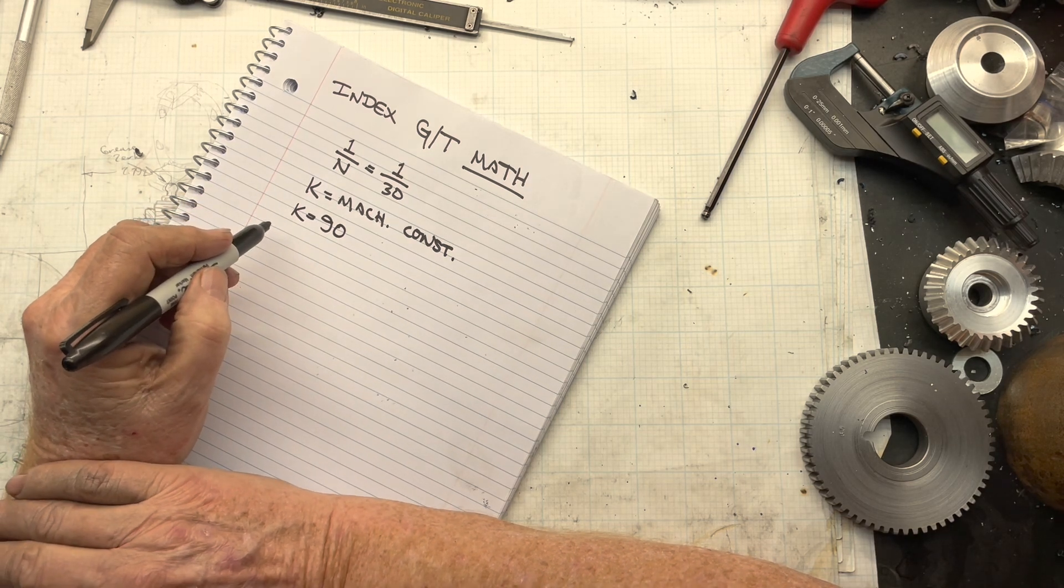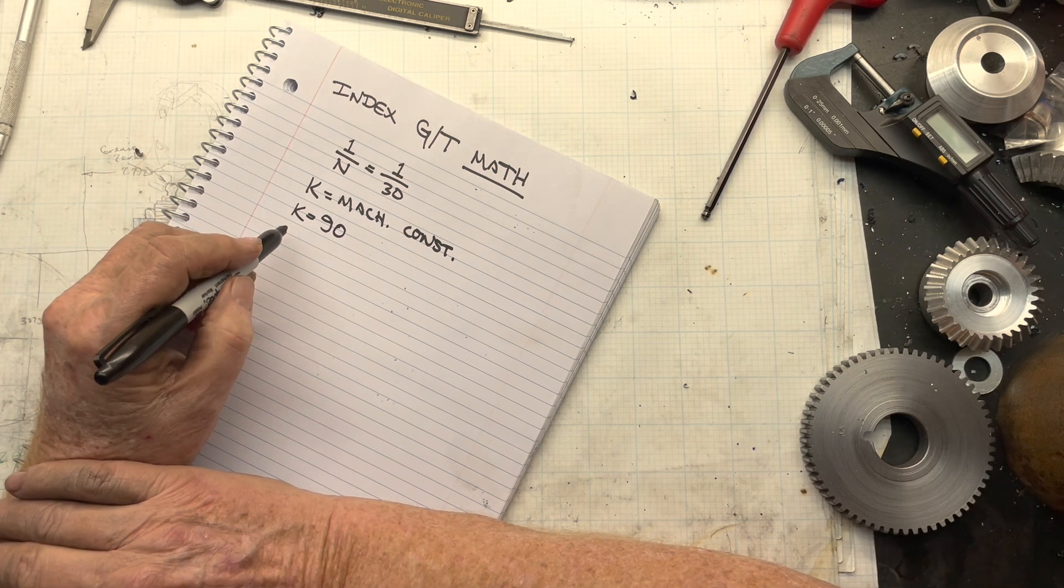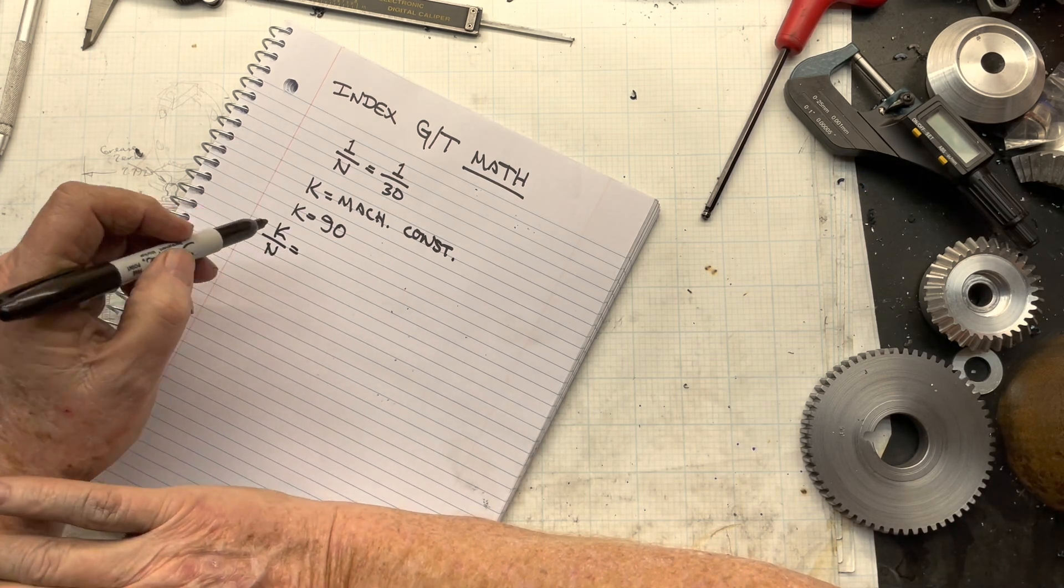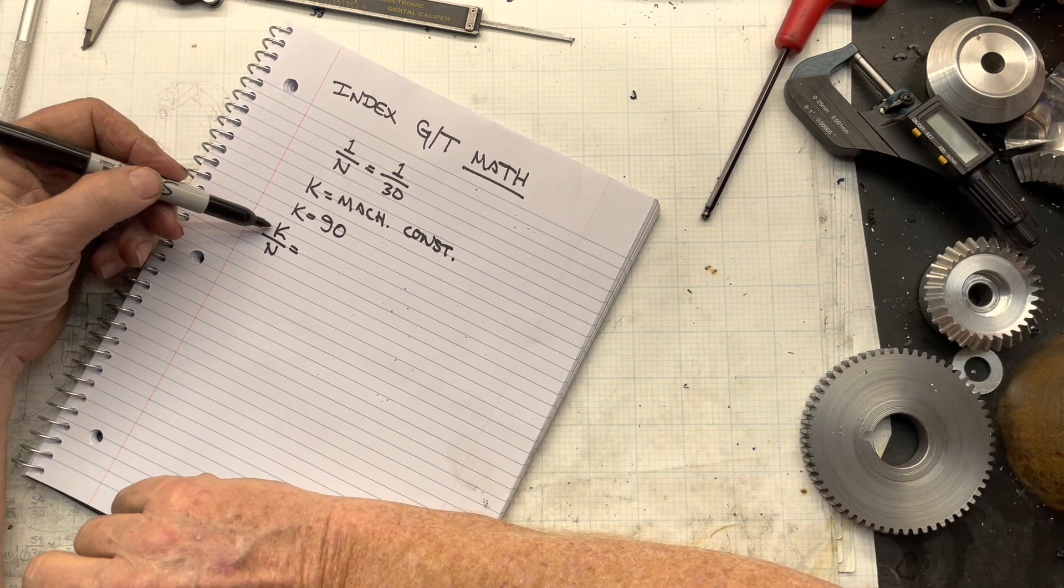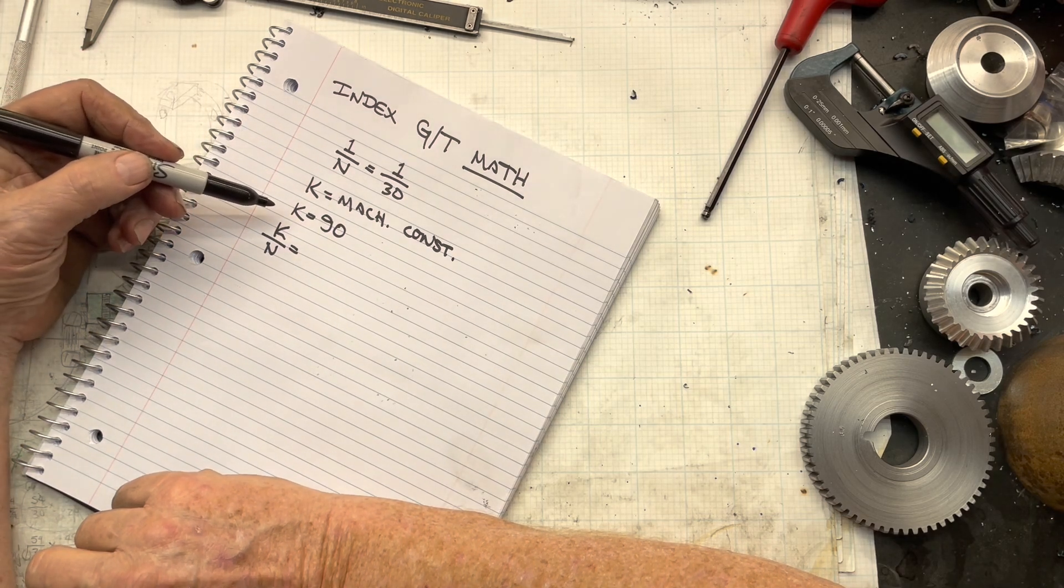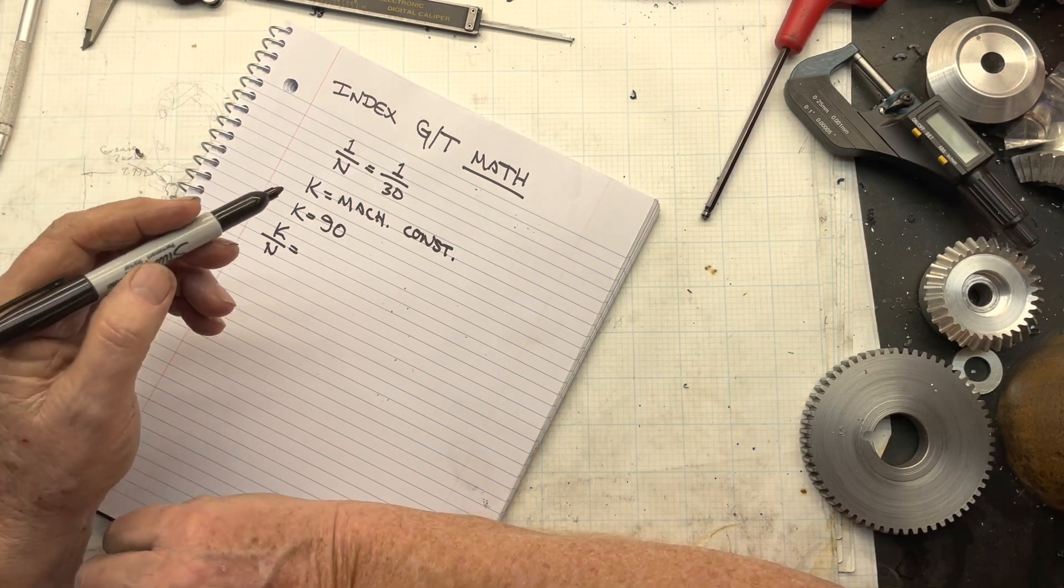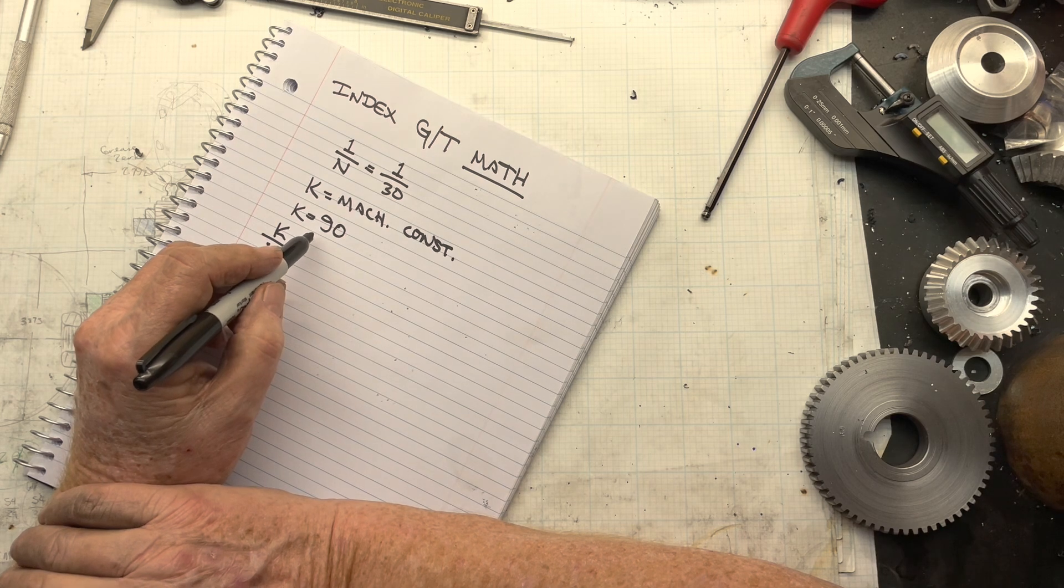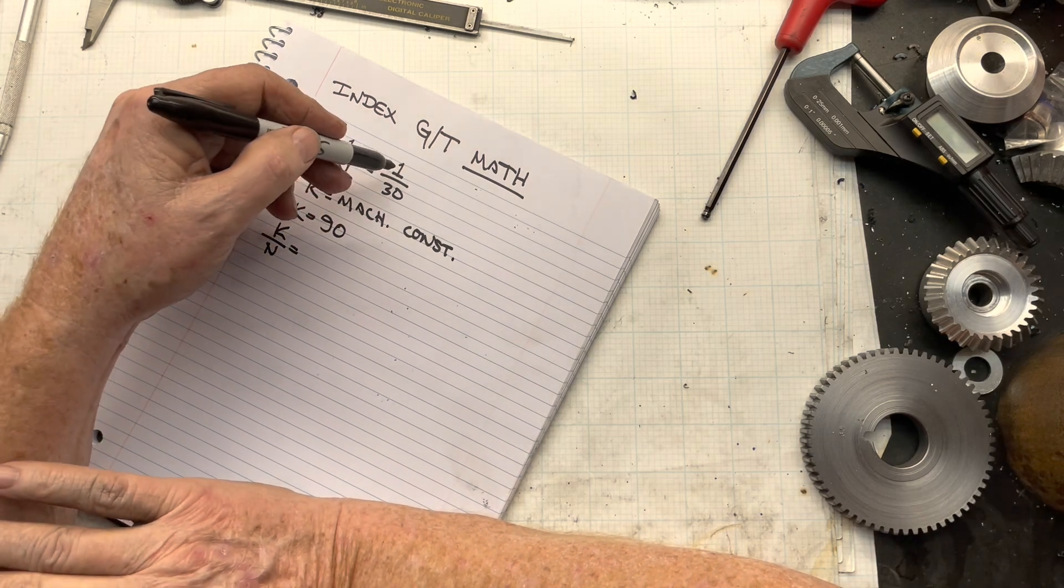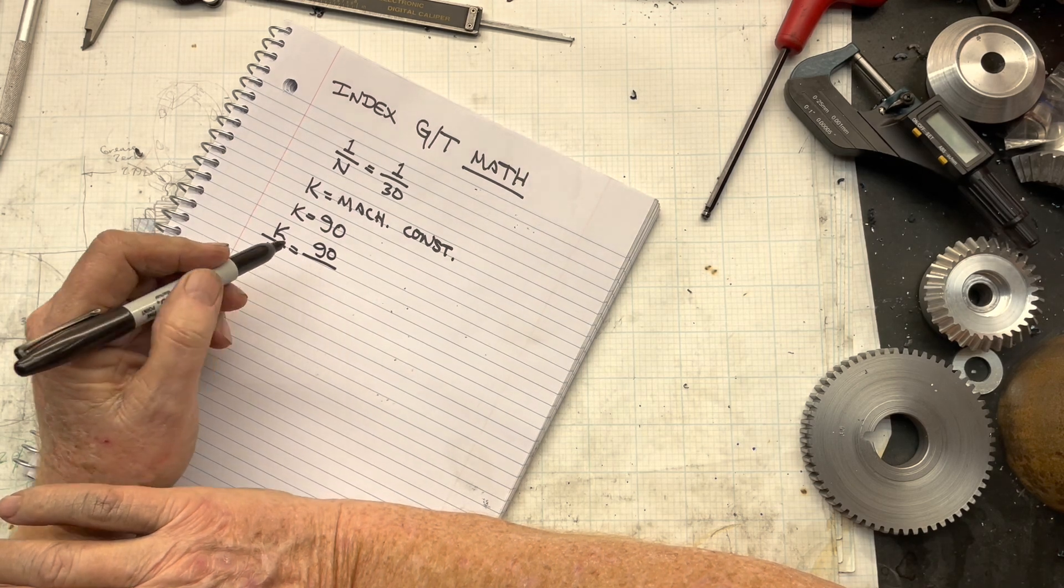So when I need to calculate a ratio for a different gear design, I start with the fraction K over n, because it takes K revolutions to produce one revolution of the work. Regardless of what your machine looks like, there's some thing like that that represents how many revolutions of the index train output I need to produce one revolution of the work. So for me, that fraction is 90 over n.